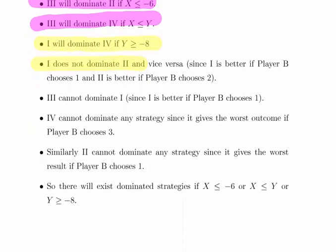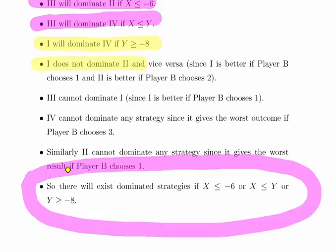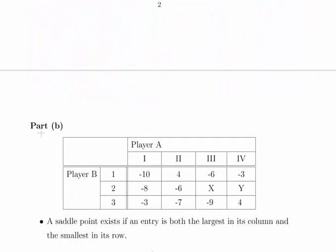The worst denominated outcome. Now so that's essentially it, so it's sort of a review of the whole thing, just walking and talking through the whole thing. So there exists dominated strategies if X is less than or equal to minus 6 or X is less than Y or Y is greater than minus 8. So that is it in a nutshell. It just takes time to walk through it, think through it, step by step comparisons, side by side comparisons of one strategy and the other and just sort of think through it like that. Be patient with it.